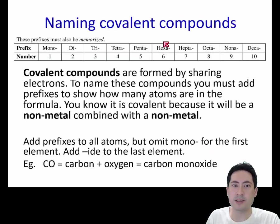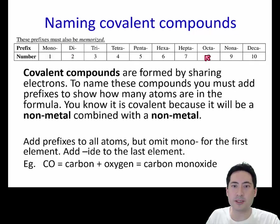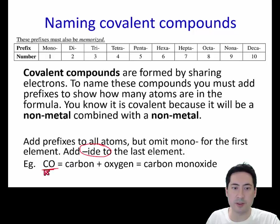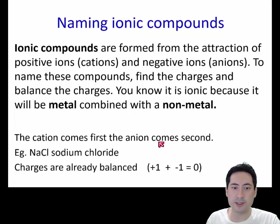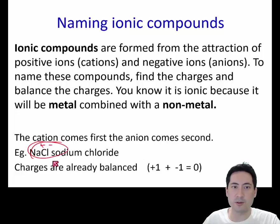Reviewing covalent compounds — this is assumed knowledge for the IB. These are the prefixes we put on compounds. We don't put mono on the front, and we always put an -ide at the end. So it wouldn't be monocarbon — it'd just be carbon monoxide, changing oxygen to -ide. For ionic compounds, same story: add -ide at the end, positive ones at the front, negative ones at the end. Make sure they balance — sodium is +1, chlorine is −1, so it's sodium chloride.